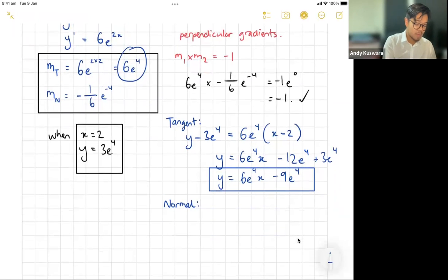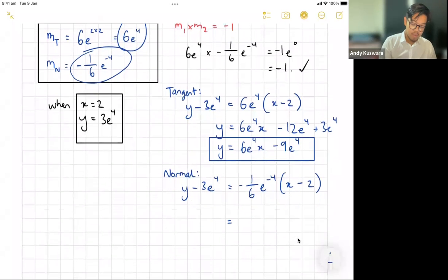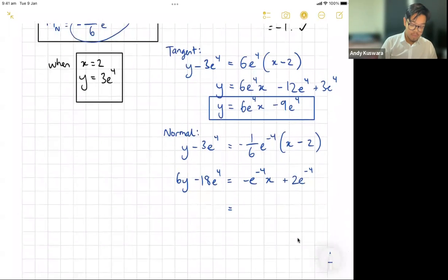Now for your normal, we do a very similar thing. The only difference now is we don't use 6e to the 4, we use our negative 1 over 6e to the negative 4. So again, y minus 3e to the 4 equals m, so this time I'm using my m here, negative 1 over 6e to the negative 4, times x minus x1, and in this case it's 2. For here, because it's slightly more disgusting, I'm just going to times everything through by 6, so I get 6y minus 18e to the 4, and this becomes negative e to the negative 4 times x, and it's going to become plus 2e to the negative 4.